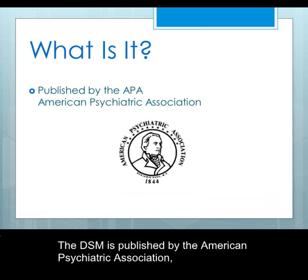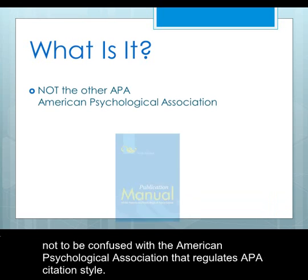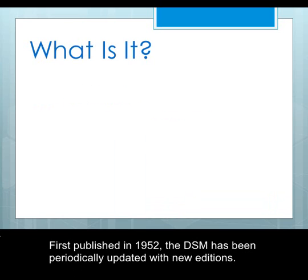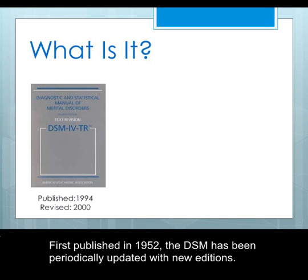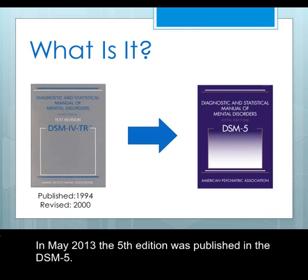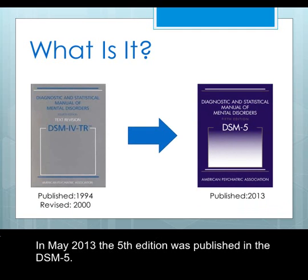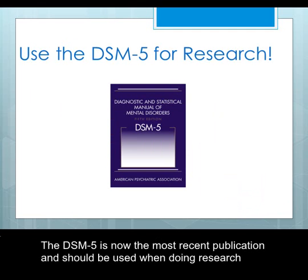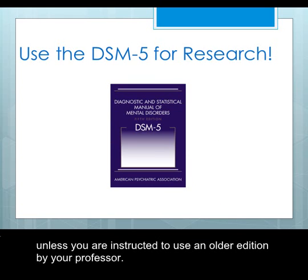The DSM is published by the American Psychiatric Association — not to be confused with the American Psychological Association that regulates APA citation style. First published in 1952, the DSM has been periodically updated with new editions. In 1994, the APA published the DSM-IV, which was then revised in 2000 into the DSM-IV-TR. In May 2013, the fifth edition was published as the DSM-5, which is now the most recent publication and should be used when doing research unless instructed to use an older edition by your professor.